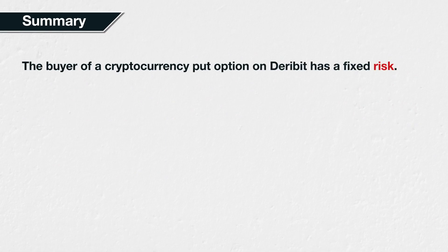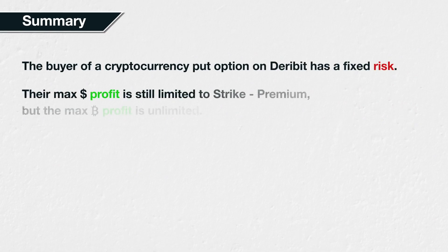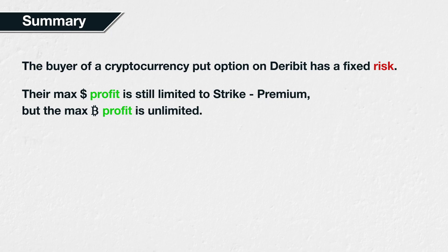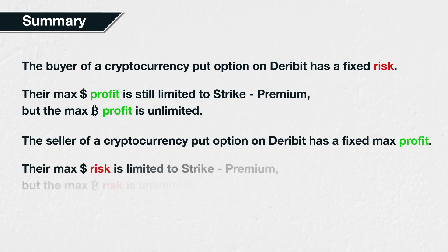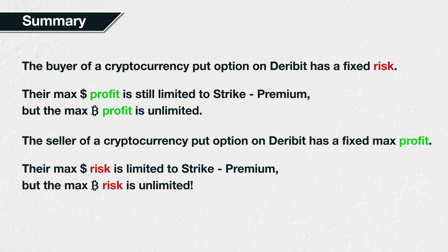In summary, the buyer of a cryptocurrency put option has a fixed risk. Their profit measured in dollars is limited to the strike price minus the premium, but when measured in Bitcoin is unlimited. The seller of a cryptocurrency put option has a fixed potential profit. The dollar risk is limited to the strike price minus the premium paid, but measured in Bitcoin, this risk is unlimited. For this reason, the seller of a put option will normally either be hedged in some form from the start, or at least have a plan of under what circumstances they will either hedge or exit the position.